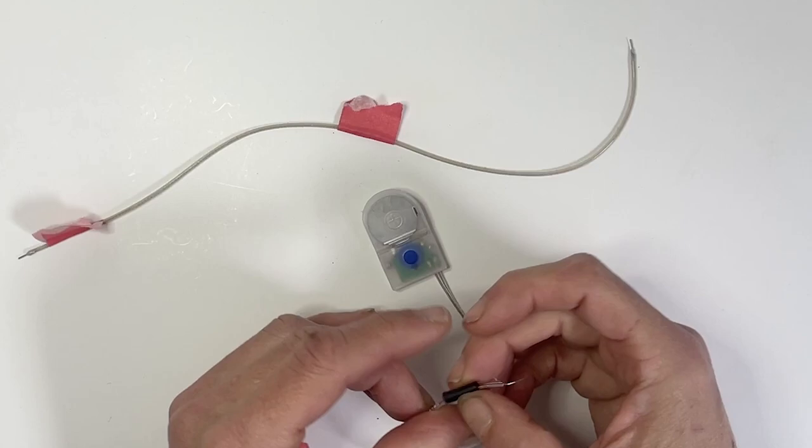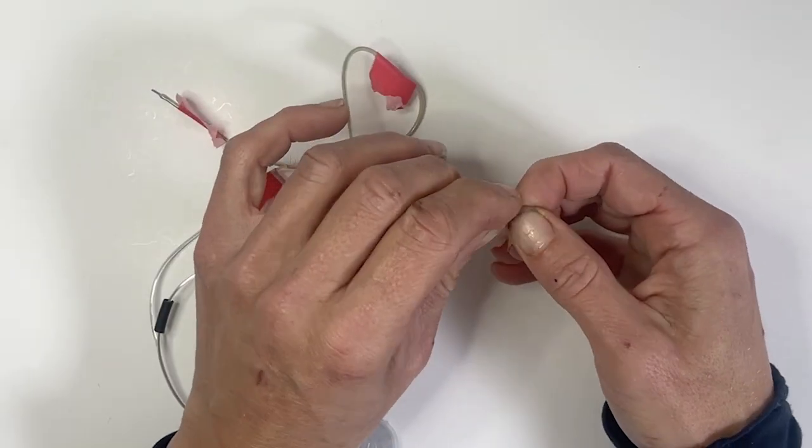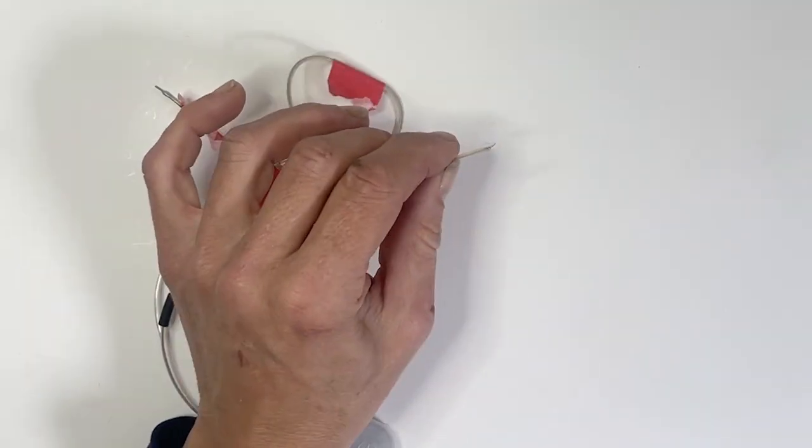Now we'll solder them up. Flip on some heat shrink, and it helps to bend the lead on the nude into a little hook so that you have something to attach your wire to.